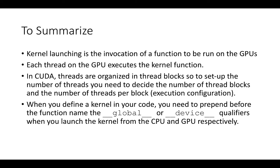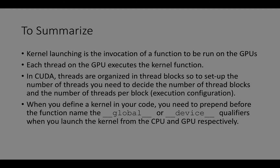In this lecture, we looked at how to run a function on GPUs, focusing on four main points. First, kernel launching is the invocation of a function to be run on GPUs. Second, CUDA follows the SIMT model in which each CUDA thread executes the kernel function. Third, threads in CUDA are organized in thread blocks, so we need to decide the number of thread blocks and threads per block — the execution configuration. Finally, when we define a kernel we need to prepend the qualifiers before the function name. In the next CUDA lecture, we will continue looking at how to run a kernel on GPU and explore additional basic CUDA features. We are done with the second lecture on CUDA — talk to you in a bit.